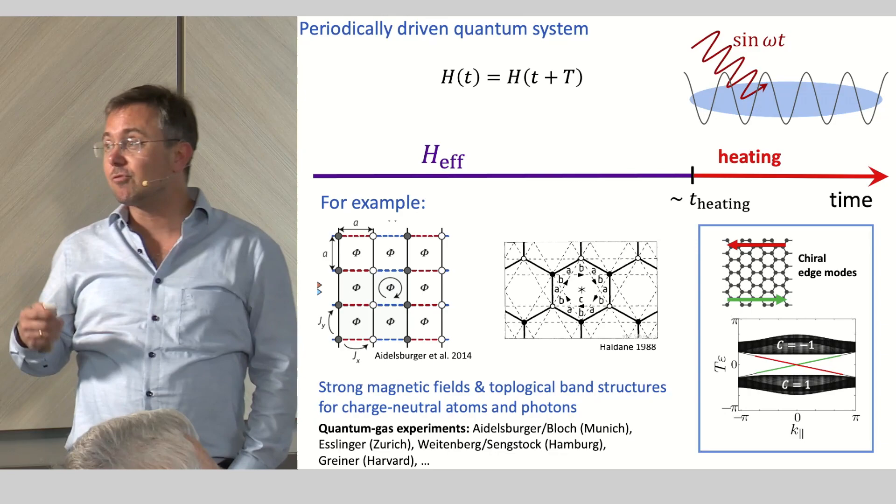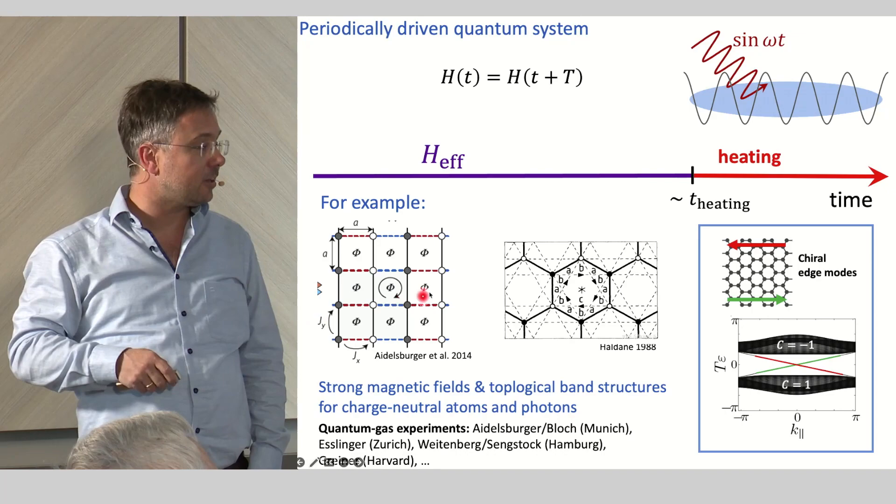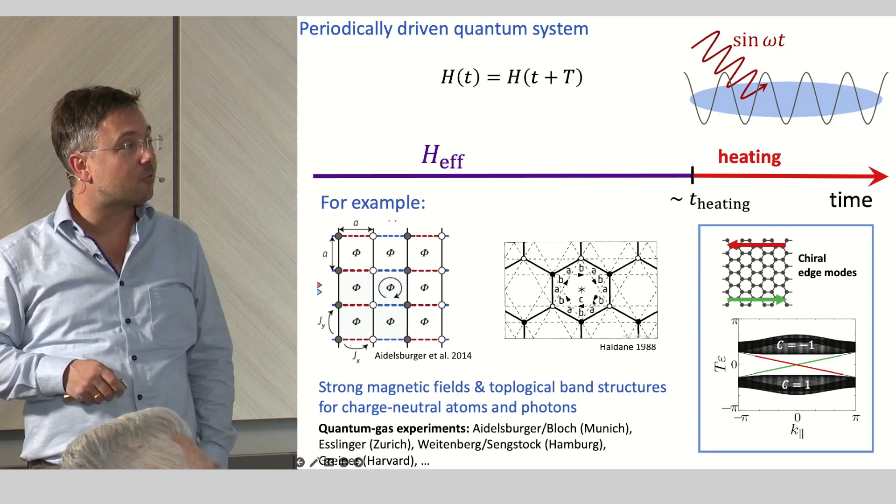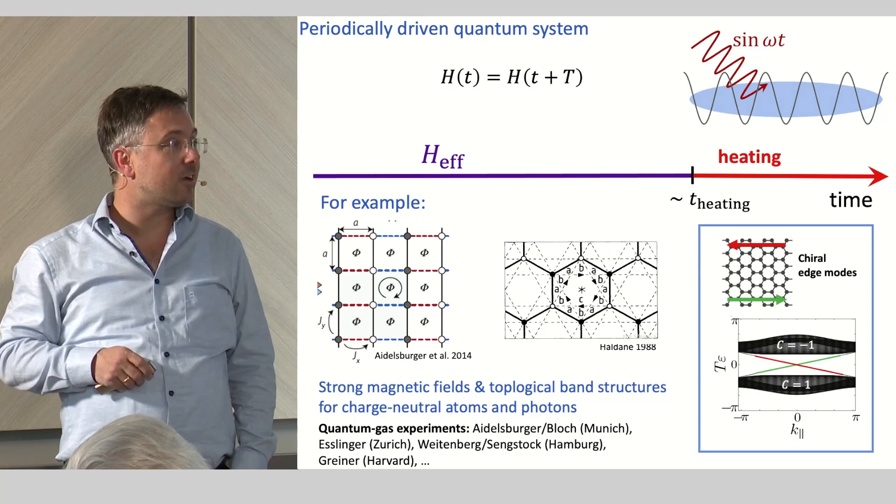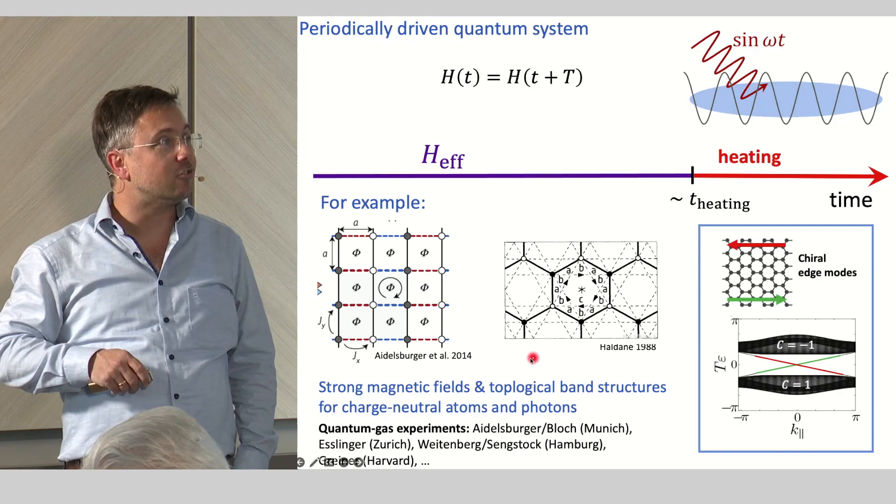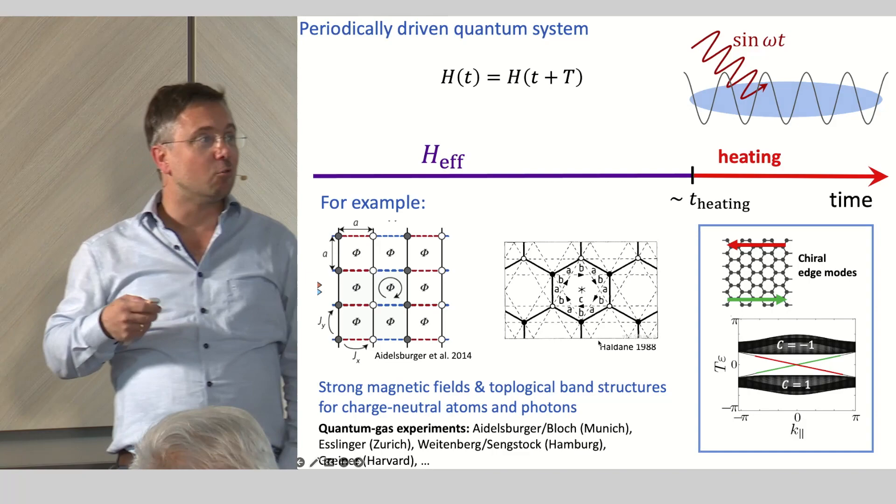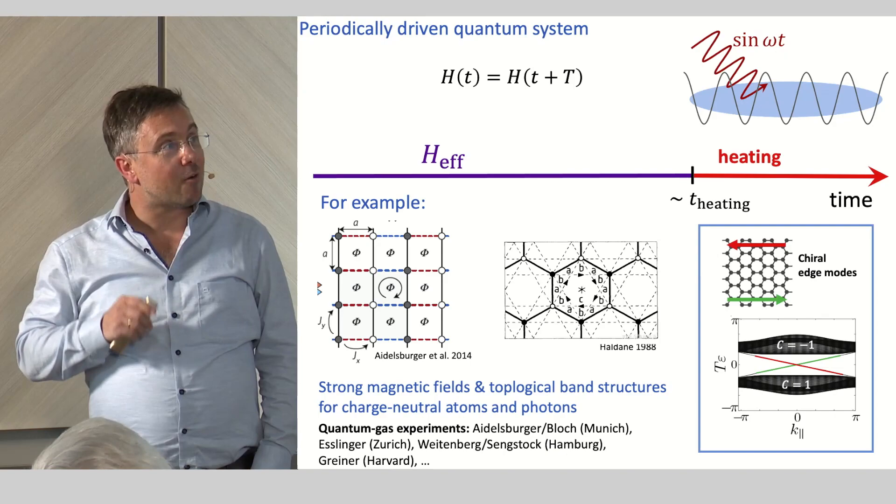One very important example for which this has been used in recent years is the realization of artificial magnetic fields, in square lattices or hexagonal lattices. There have been experiments in quantum gases in the groups of Monika Eidelsburger, Emmanuel Bloch, Christoph Weidenberg, Klaus Sengstock, Tilman Esslinger, and so on. You can in particular engineer topological insulators and also phases of matter which you wouldn't be able to engineer without driving. But I don't want to go too much into detail here.